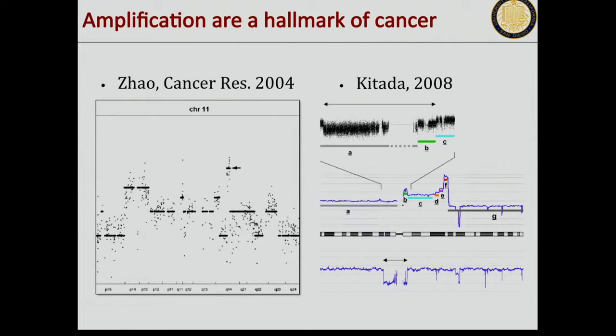If you look at cancer, it's been known for a long time. This is hybridization data which shows all of these patterns of large regions of the genome being amplified. A good question to ask is, what's the mechanism behind these kinds of amplifications?